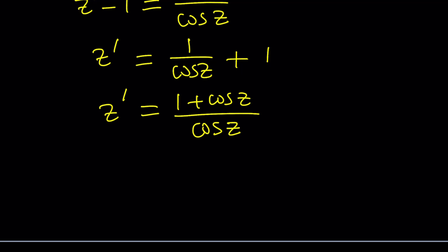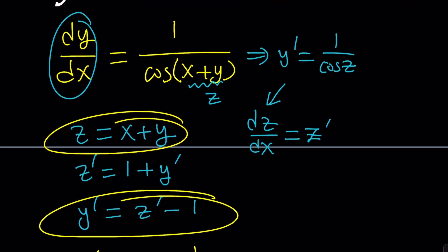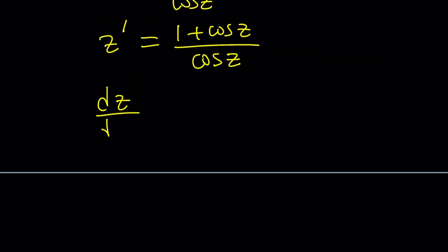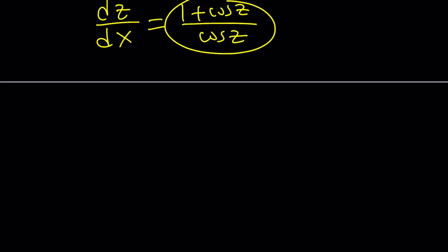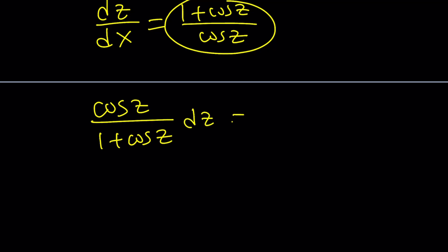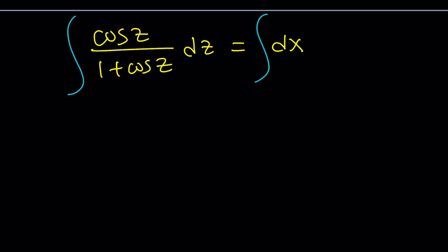We can make a common denominator and write it as 1 plus cosine of z divided by cosine of z, which equals z prime. We can write z prime as dz over dx, so this becomes dz over dx equals 1 plus cosine z over cosine z. Rearranging, we get cosine of z divided by 1 plus cosine of z dz equals dx. The next step is integrating both sides.